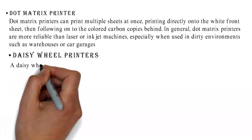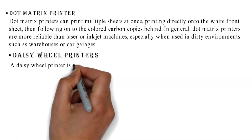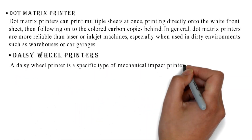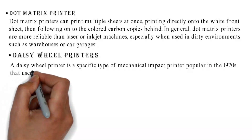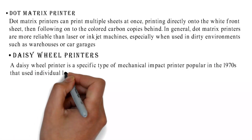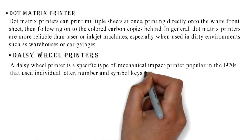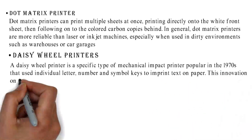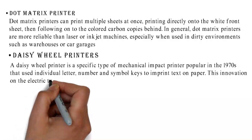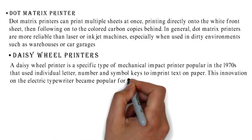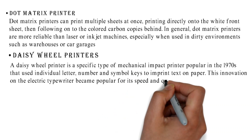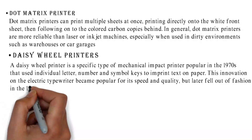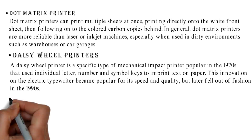Daisy wheel printers. A daisy wheel printer is a specific type of mechanical impact printer popular in the 1970s that used individual letter, number, and symbol keys to imprint text on paper. This innovation on the electric typewriter became popular for its speed and quality, but later fell out of fashion in the 1990s.